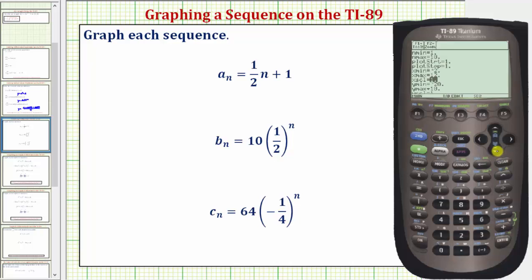Now the y min and y max right now are negative twenty and positive ten. Well notice how none of the terms will be negative. Let's change the y min to negative two, enter. The maximum value for n is ten. Notice when n is ten, a sub ten is going to be six. Let's change the y max to eight, enter.